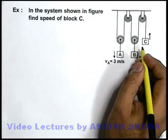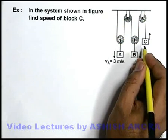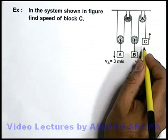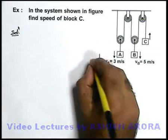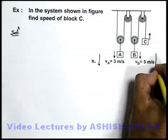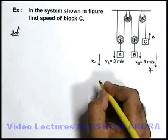To find out the velocity of block C, we are required to relate their displacements first. So in the solution first, we consider A is coming down by a distance x, B is coming down by a distance y, and C is going up by a distance z.